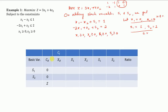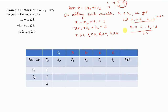As discussed in the previous lecture, this is the format of the simplex table. Here cj represents the coefficients of x1, x2, s1, s2 in the objective function, so we write 3, 4, 0, 0. The basic variables are s1 and s2. cb are the coefficients of basic variables in the objective function — since s1 and s2 are not in the objective function, their coefficients are 0. The xb values are 1 and 2.